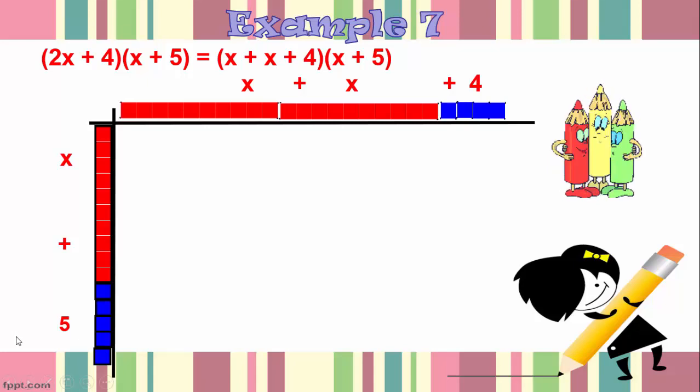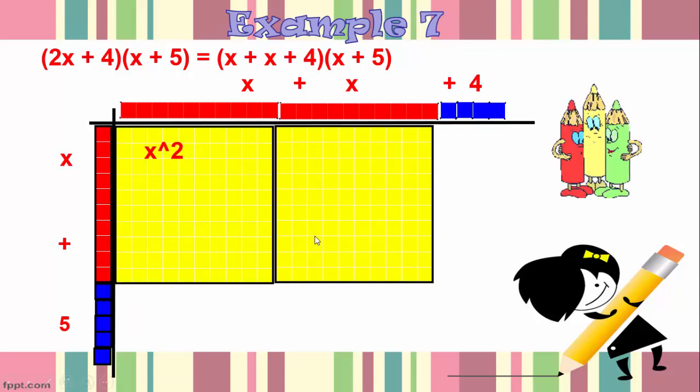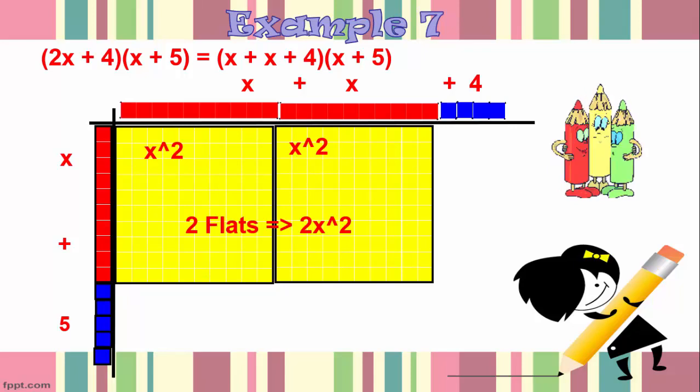Now I'm going to fill in the area. I fill it in with one yellow flat and then another yellow flat. Each of these flats is x squared and we have two of them so therefore that means it's 2x squared.